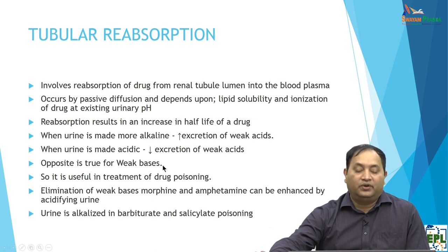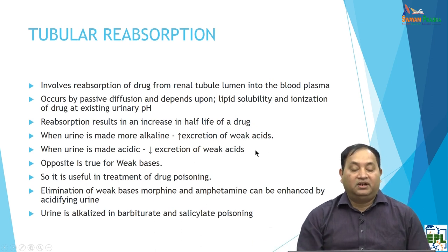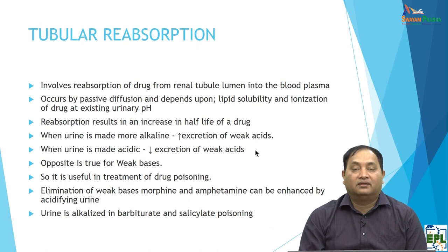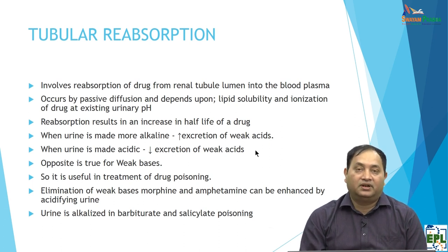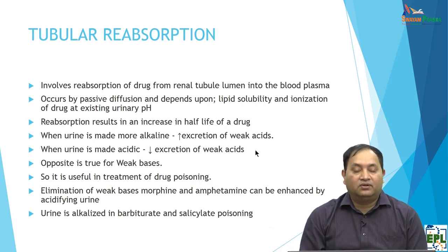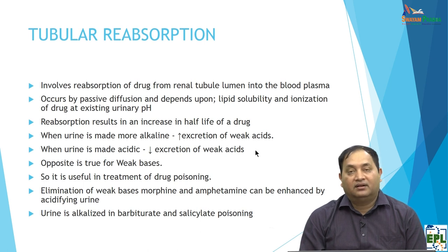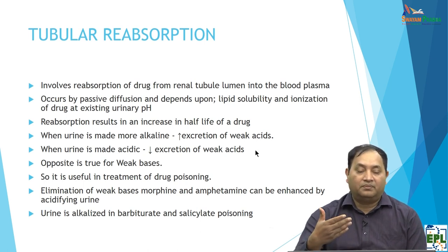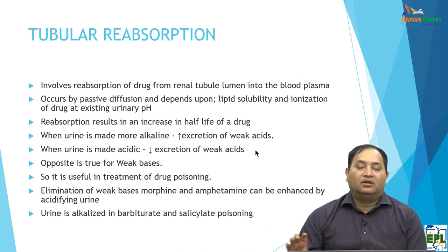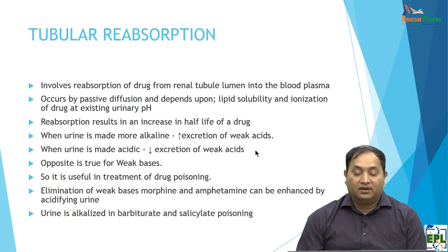This principle can be used clinically in cases of drug poisoning overdose to enhance excretion. Elimination of weak bases like morphine, opiates, or amphetamine can be enhanced by acidifying the urine — this can be applied in poisoning cases. Conversely, alkalizing the urine can enhance the excretion of weak acid drugs such as barbiturates or salicylates. Increased tubular reabsorption prolongs drug half-life, but pH manipulation can be used practically in poisoning management.